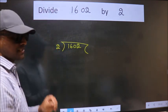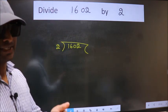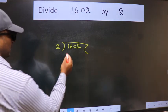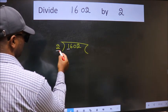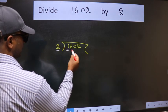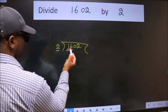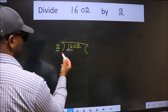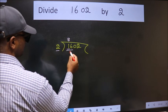This is your step 1. Next, here we have 1 and here 2. 1 is smaller than 2, so we should take 2 numbers: 16. When do we get 16 in 2 table? 2 times 8 is 16.